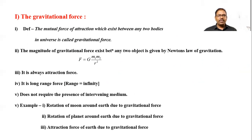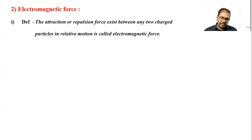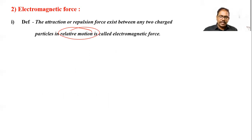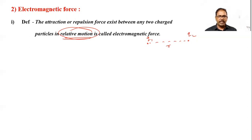The next type of force is electromagnetic force. The attraction or repulsion force that exists between any two charged particles in relative motion is called electromagnetic force. If the two charged particles are at rest — say charge q1 and charge q2 separated by distance r — then the force between them is called electrostatic force. Only when these two charges are in relative motion is the force called electromagnetic force.